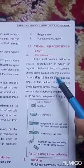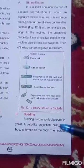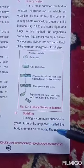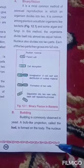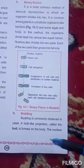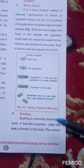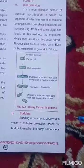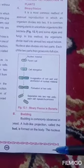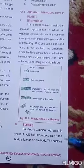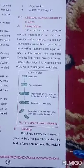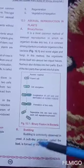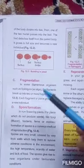Budding is another method of asexual reproduction whereby a bulb-like projection called a bud is formed on the body. This method is mostly found in yeast. The nucleus also passes into the bud, the bud detaches from the main body, and survives separately as an independent individual.